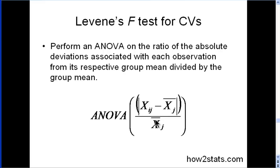In formula terms, where it might be easier to understand, you're simply subtracting a person's value from the mean of the group, taking the absolute value of that difference, and then dividing that difference by the mean. Every person gets a value — it's basically a coefficient of variation value that's corrected for a difference in the mean. And every person gets a score like that.